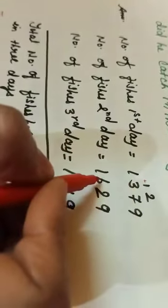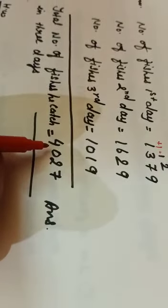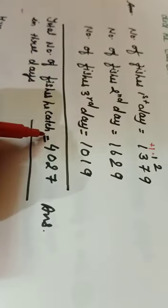6 plus 3 is 9, and 1 is 10. For 10, we will write here 0, and 1 carry. 1 plus 1 plus 1, plus 1 is 3, and 1 carry is 4. So, total number of fishes he catch in 3 days is equal to 4027.